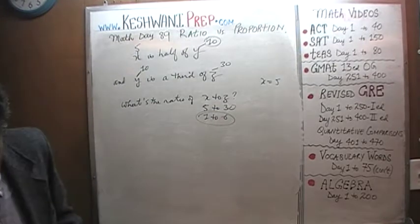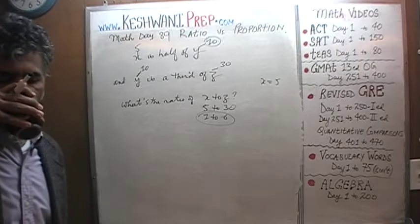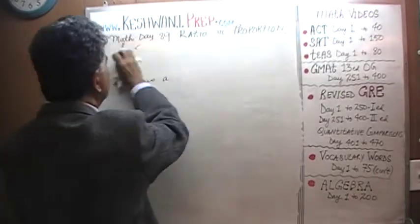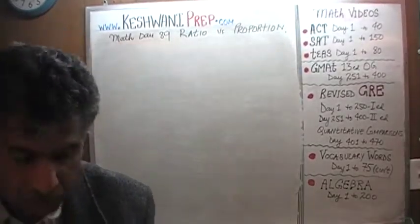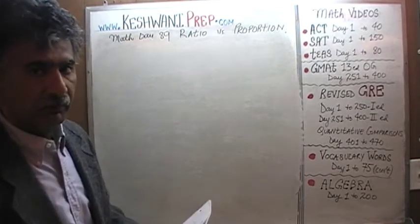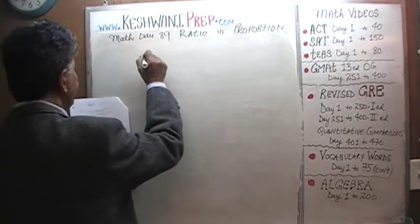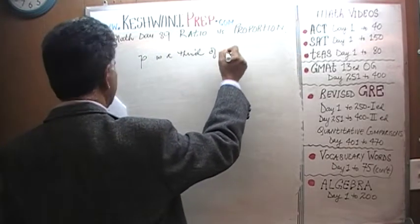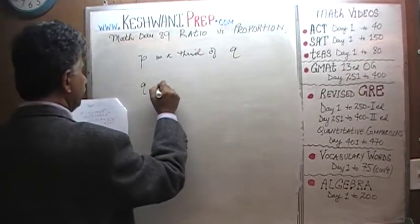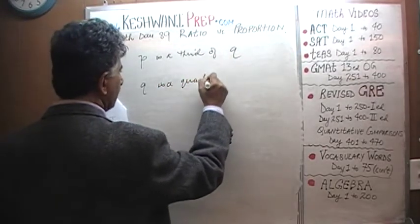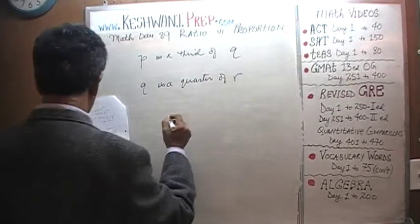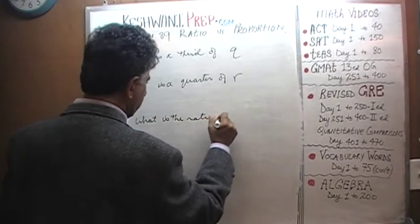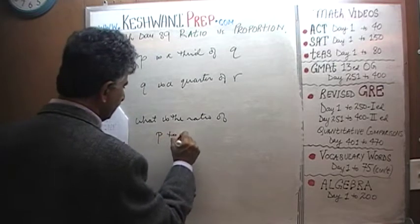Let's do one more — a similar one. As soon as I finish writing the problem, pause the video immediately and do it yourself first. Here's the next one: P is a third of Q, and Q is a quarter of R. The question is: what is the ratio of P to Q to R?